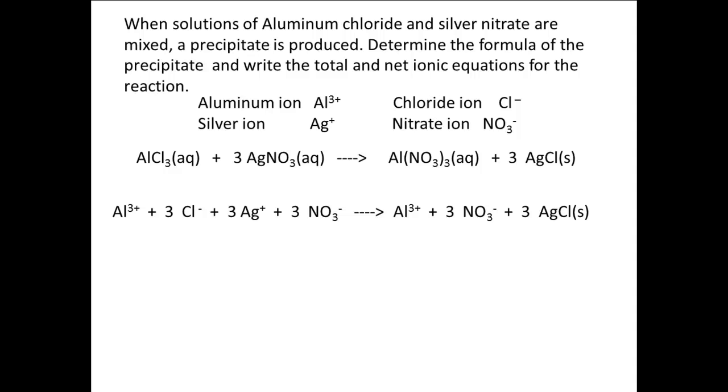The Al3+ ions are the same, and there is one of each, so they completely cancel. And the NO3- ions are the same and have the same amount, so they cancel out as well. This leaves us with three Cl- plus three Ag+ gives three AgCl solid.